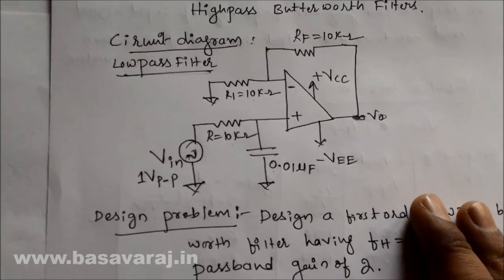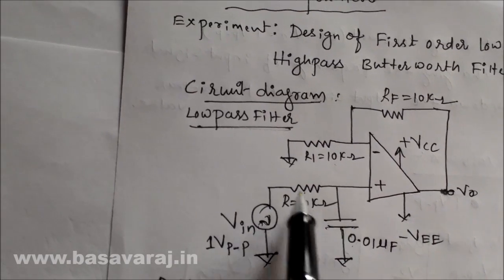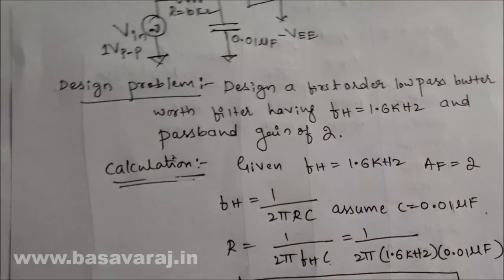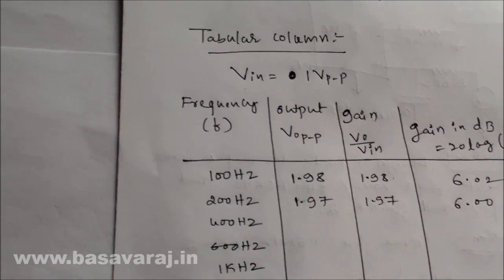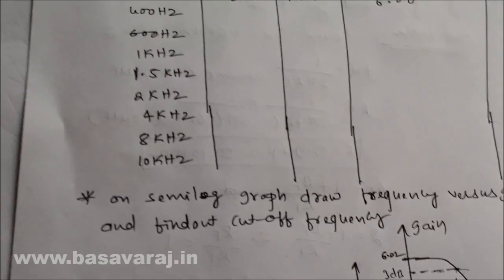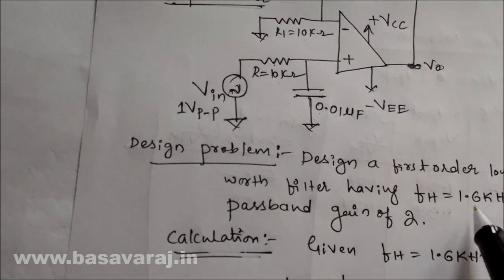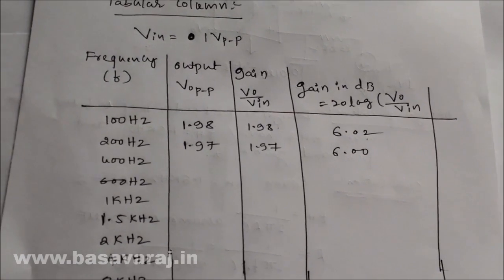For the high pass filter, the procedure is the same. Interchange the positions of the capacitor and resistor — connect the capacitor where the resistor was and the resistor where the capacitor was. That gives a first order high pass filter. The design problem is the same: design a first order high pass filter with a lower cutoff frequency FL = 1.6 kHz and passband gain of 2. Keep the input voltage constant, vary the frequency, note the output voltage, calculate gain in dB, and plot frequency versus gain on a semi-log graph to find the cutoff frequency.